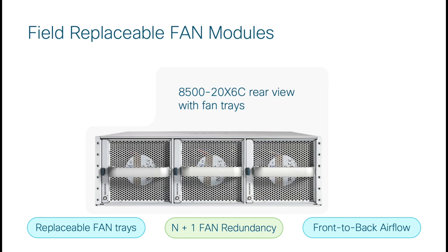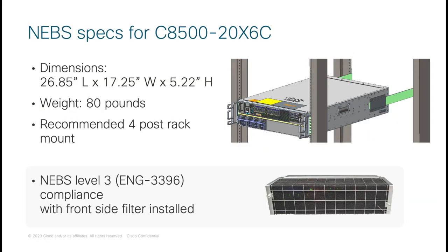The air is pulled through the chassis and the exhaust is expelled from the back side. Overall, the chassis is approximately 80 pounds or 36.5 kilograms in weight, so a four-post rack mount is standard for securing the C8500 20X6C. The chassis is three rack units tall and just under 27 inches or 69 centimeters in length, with standard 19-inch rack width. There is an option to include a NEBS compliant air filter, which can be optionally added as part of the ordering process.